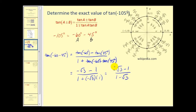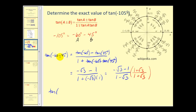This gives us negative square root 3 minus 1 over 1 minus square root 3, which is the tangent of negative 105 degrees. However, we need to rationalize this, so we multiply the top and bottom by the conjugate of the denominator, which is 1 plus square root 3.